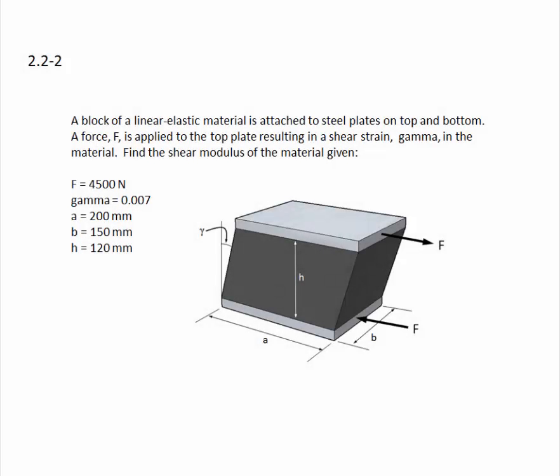Problem 2.2-2. The problem statement reads: a block of a linear elastic material is attached to steel plates on top and bottom. A force, F, is applied to the top plate, resulting in a shear strain, gamma, in the material.